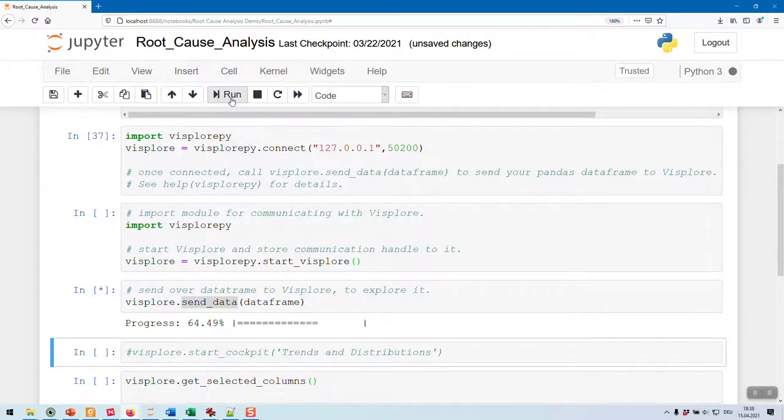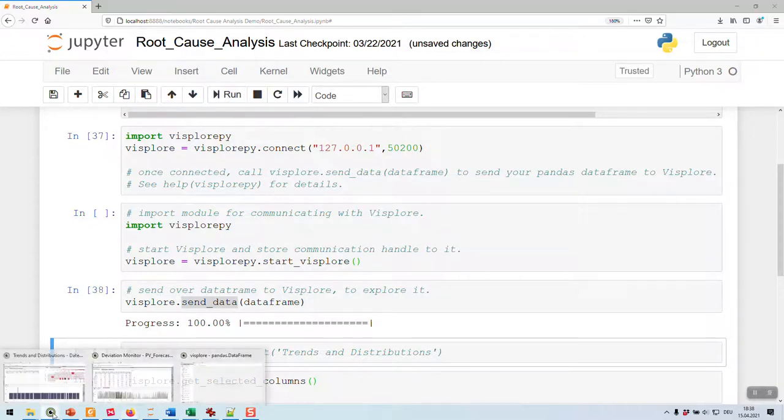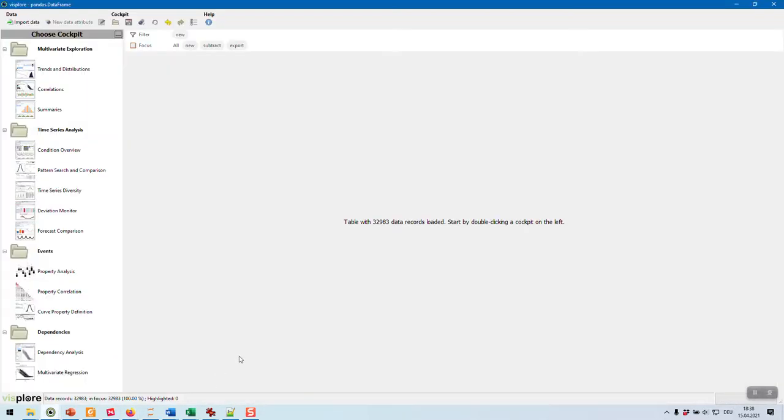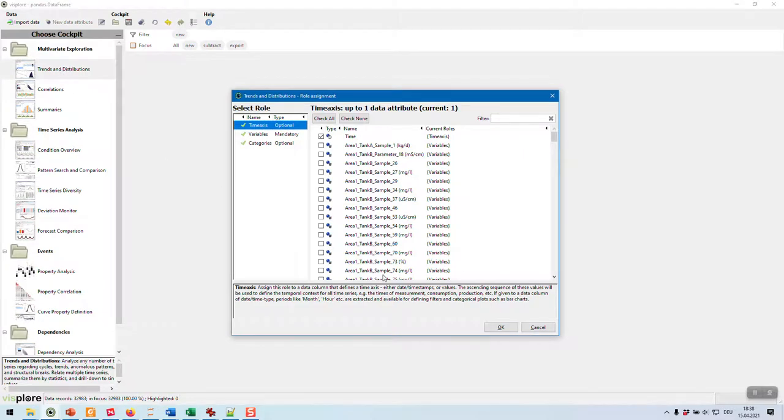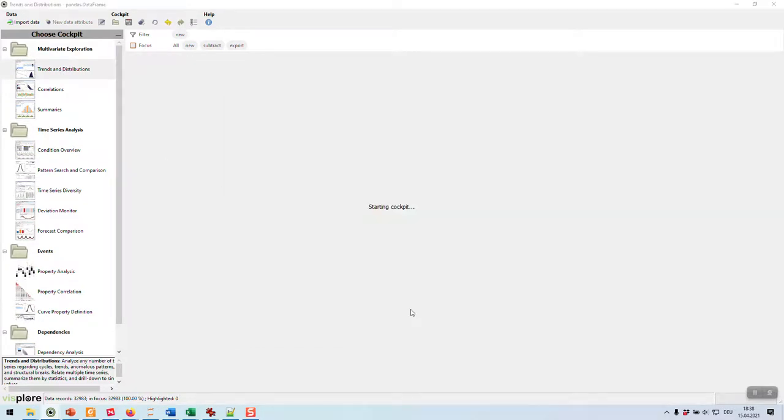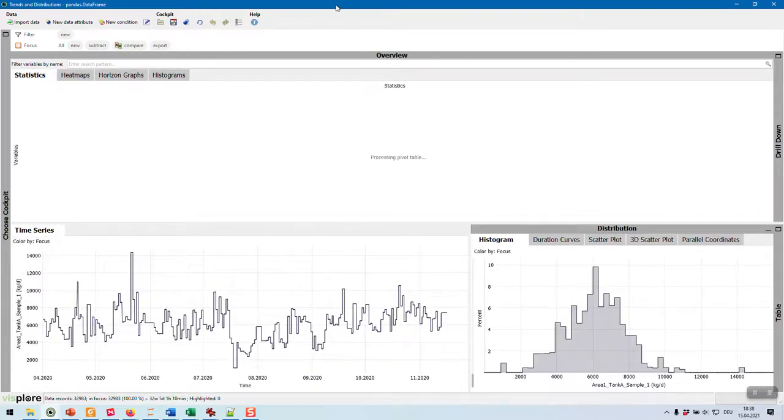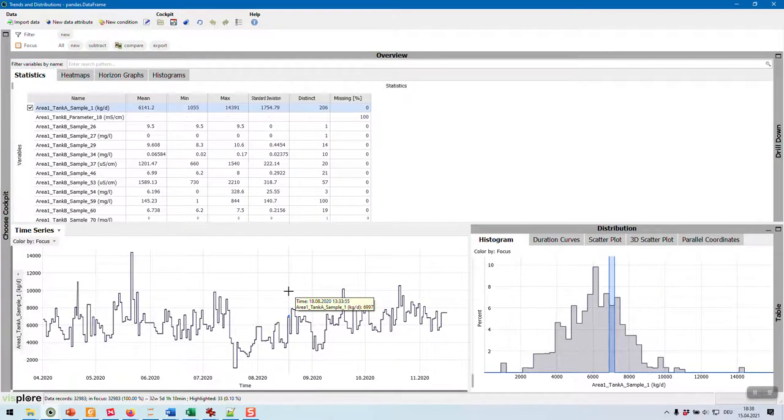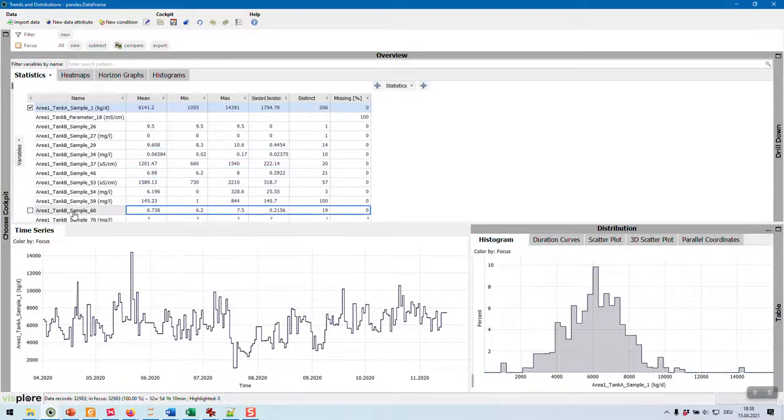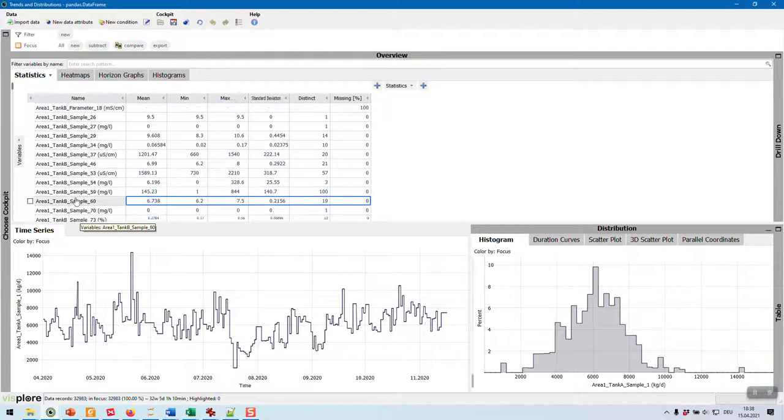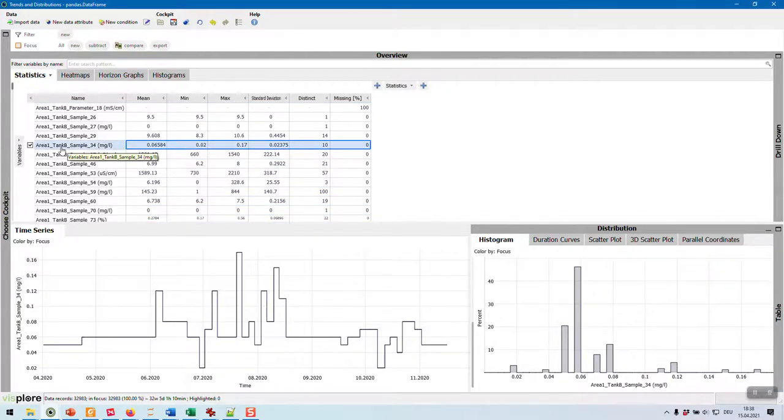So now, Python sends the data directly to an open Visplore instance. I can switch here to this Visplore instance and just start one of these cockpits. Let's say the first one for trend analysis. And after a very few seconds, I'm in a completely pre-configured cockpit where I can see an overview of my variables with statistics.